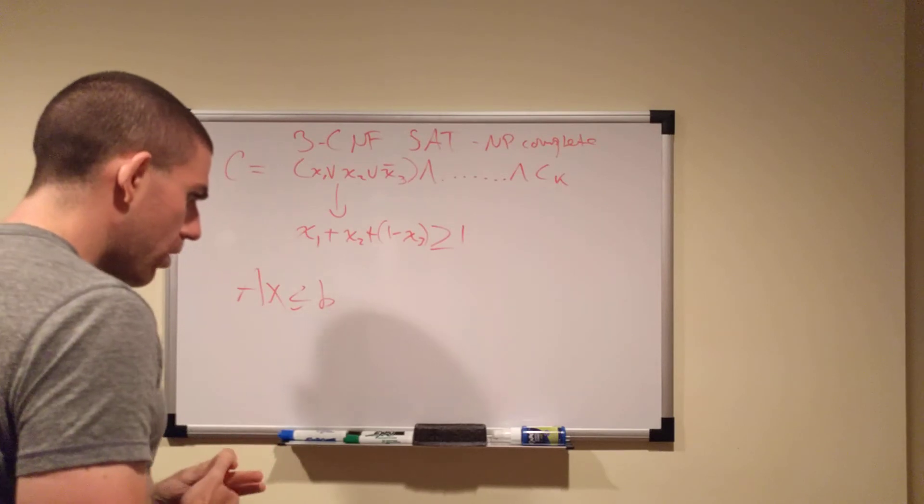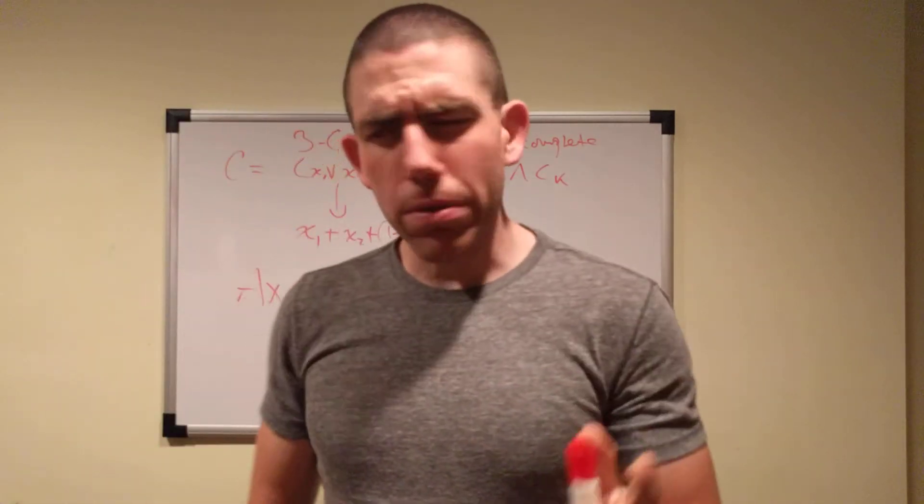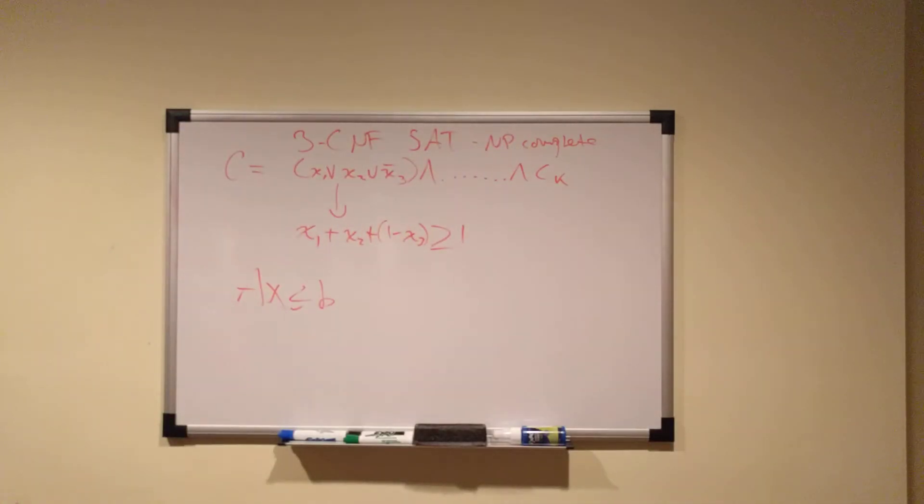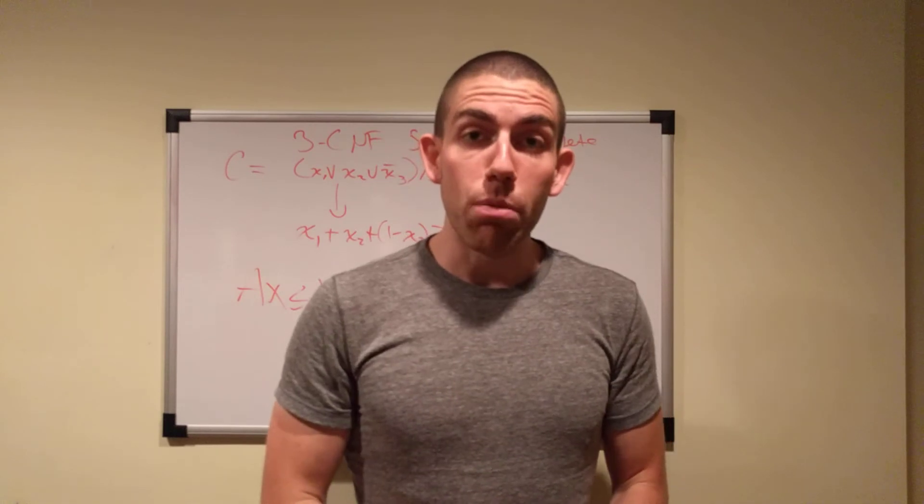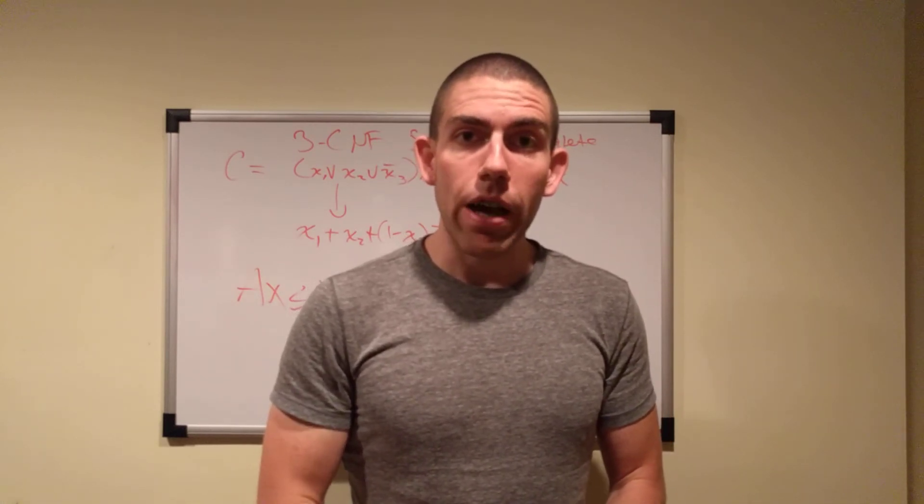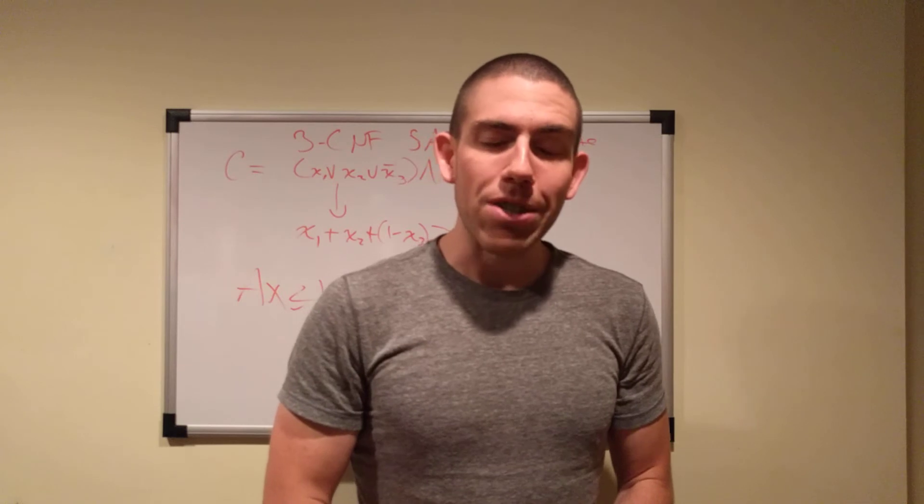Up next, we'll be looking at, what are we going to be looking at next? We're going to build a graph from a conjunctive normal form, and use that to find cliques and covers and all sorts of fun stuff. That's up next. Have a good one, guys.